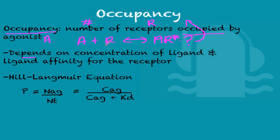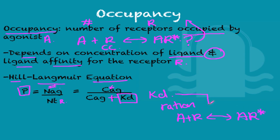Occupancy depends on the concentration of the ligand and the ligand's affinity for the receptor, and we describe this by the Hill-Langmuir equation. P is the occupancy, equivalent to the number of bound agonists divided by the total number of receptors, which also equals the agonist concentration divided by the agonist concentration plus the dissociation constant Kd. Kd is the ratio of agonists and receptors that reversibly form agonist-receptor complexes.